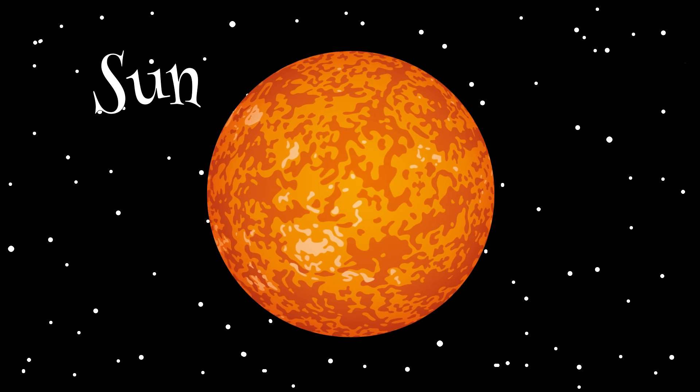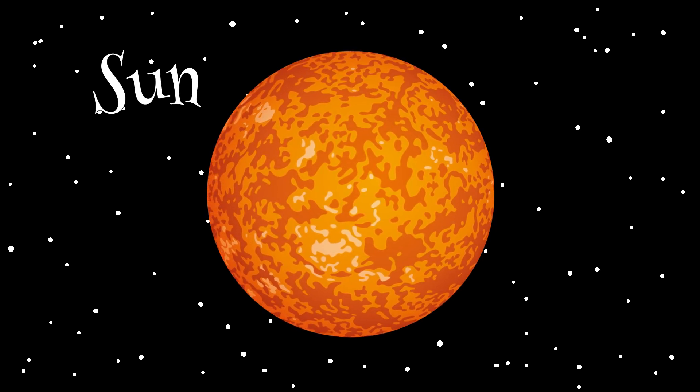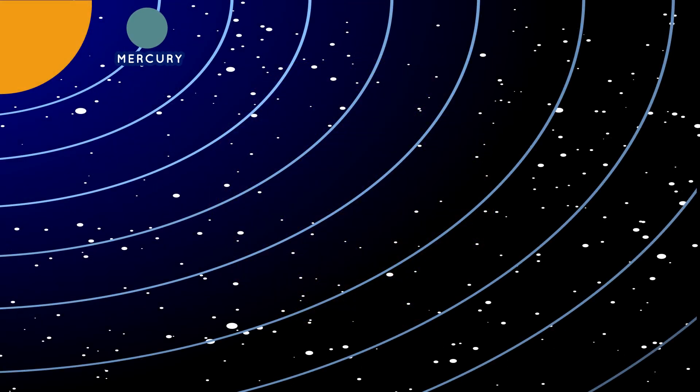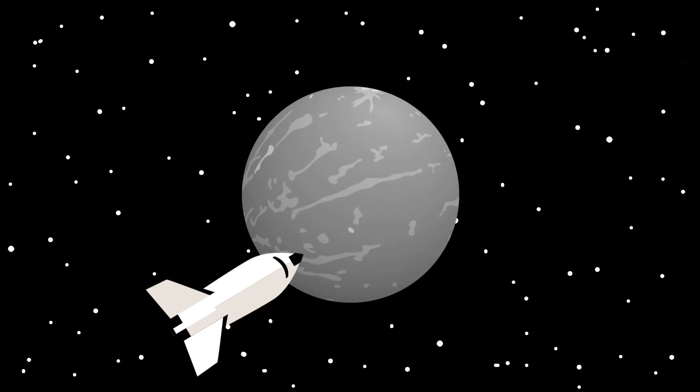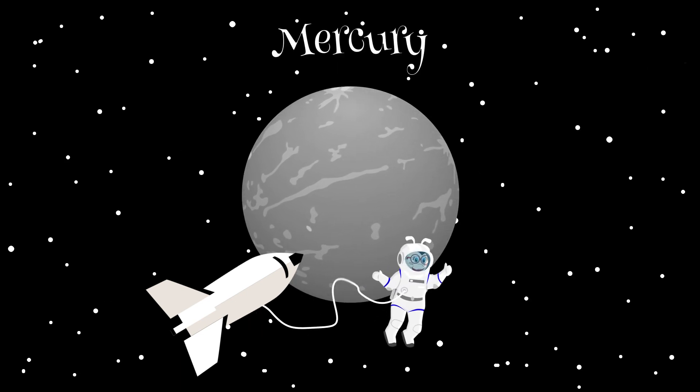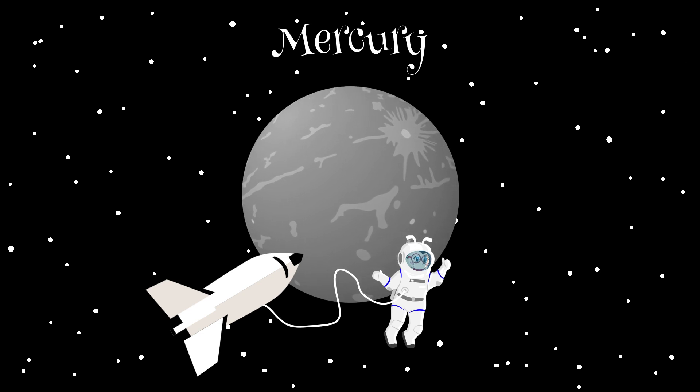Let's go over every planet in our solar system. Mercury is the closest planet to the sun. Because it is so close to the sun, Mercury can be very hot. At night, Mercury gets very cold. The temperatures are too extreme for humans to live on that planet.